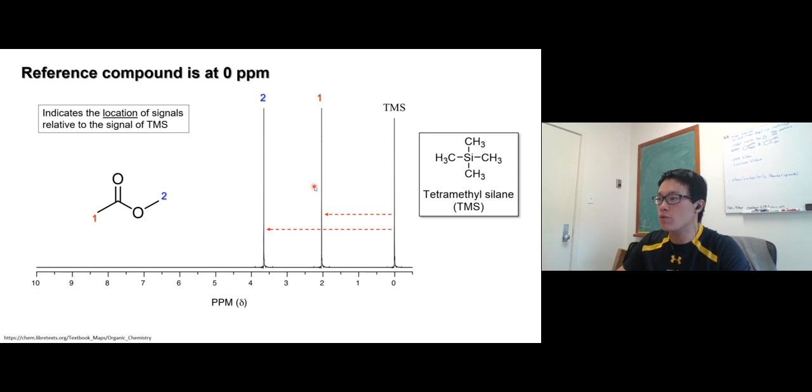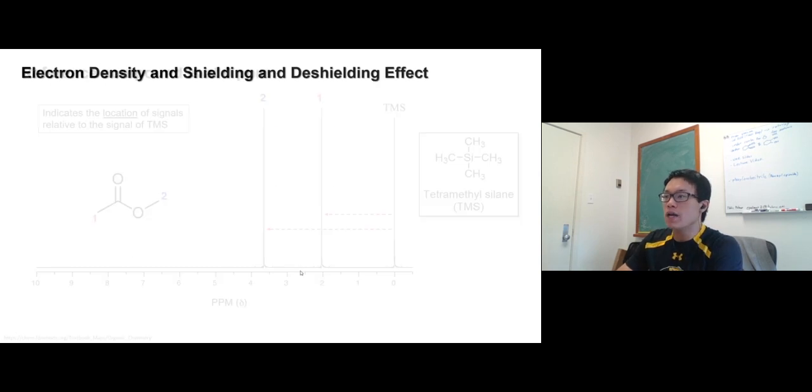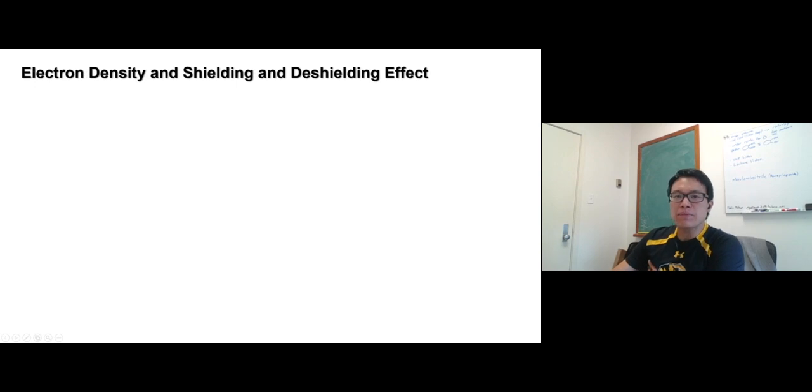So this compound got two signals, one and two. Again, same drill as when I explained the chemical shift on a carbon NMR, proton NMR is the same thing here. We have to talk about the electron density, shield and deshielding effect.